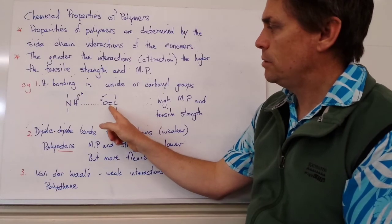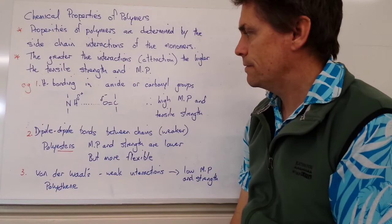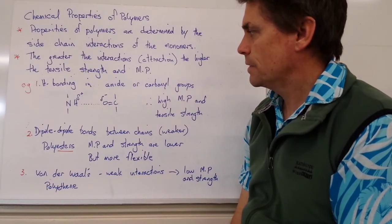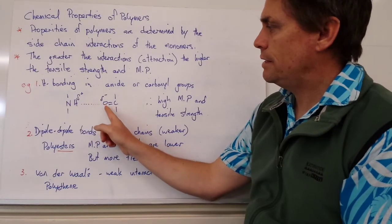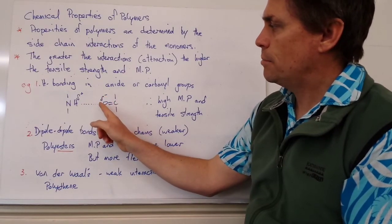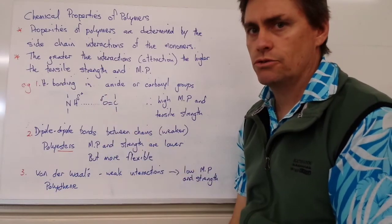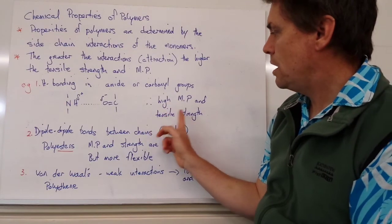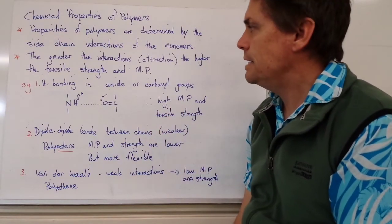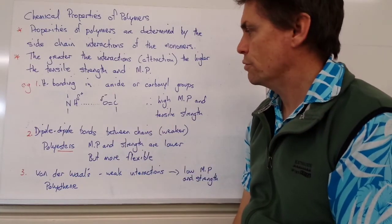That oxygen will be slightly negative in charge. So we can get an interaction between this slight positive and this slight negative in a process that we call hydrogen bonding, and that interaction is quite strong. This leads to a high melting point and high tensile strength in the polymers that contain this type of functional group.